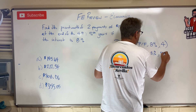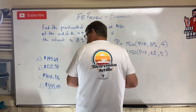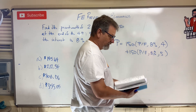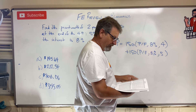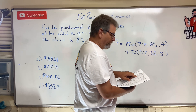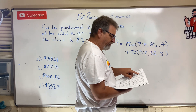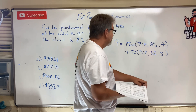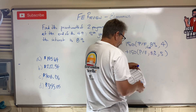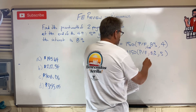These are 8% factors, so they're in our interest table. Let's look up the 8% table — P/F, P/F — first column. For n=4, the factor is 0.735. For n=5, the factor is 0.6806.